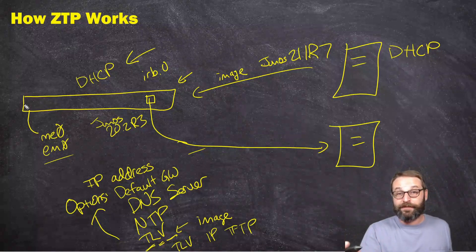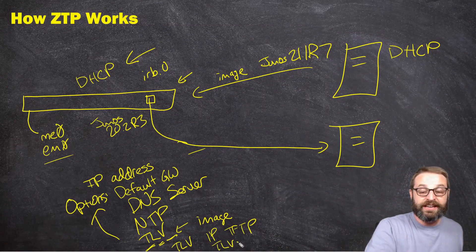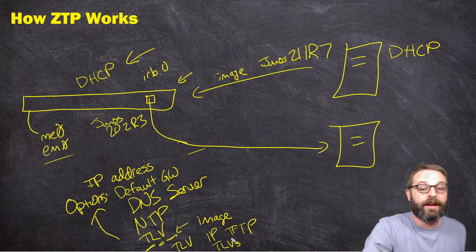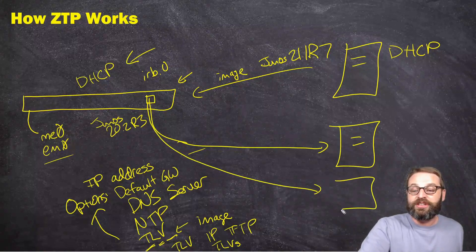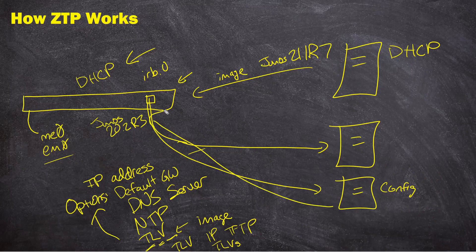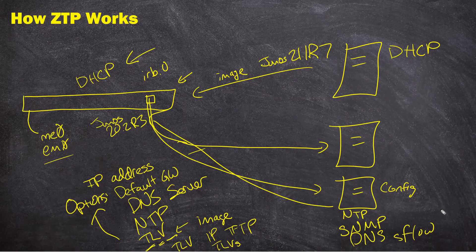Once it's brought up to the latest operating system, it can also learn via TLVs if there is a desired configuration file specifically for this device and its IP address, and what server it needs to go to. It then downloads that config file and applies it to its running configuration data store, configuring things like NTP, SNMP, DNS, sFlow, and all of the other network monitoring and maintenance settings these devices need.